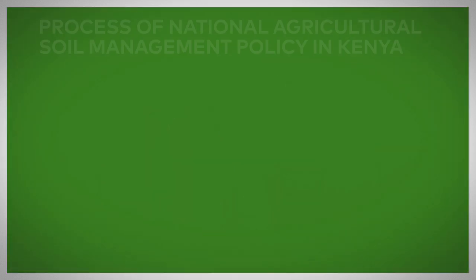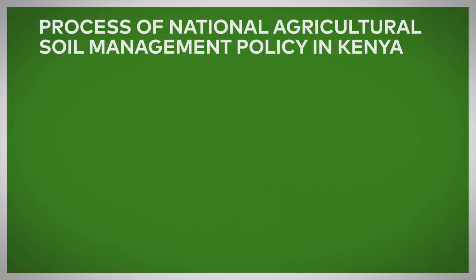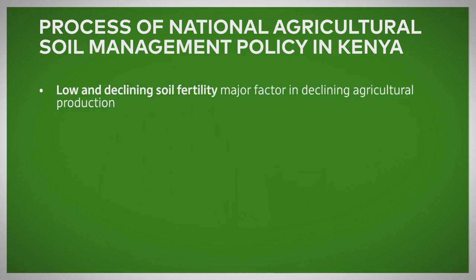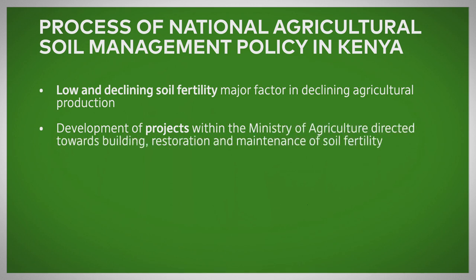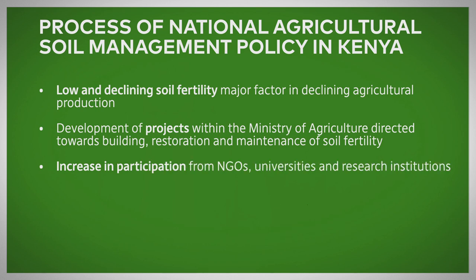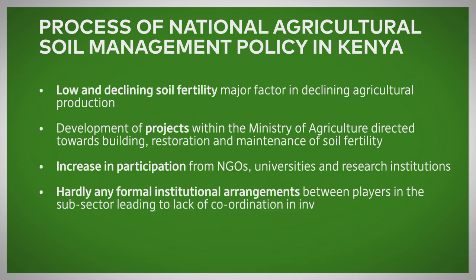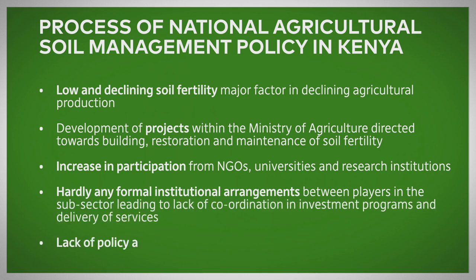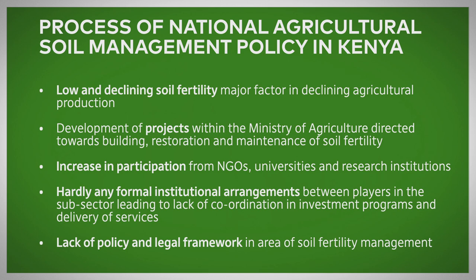Le processus de développement de la politique nationale de gestion des sols agricoles au Kenya a été déclenché par plusieurs facteurs. En premier lieu, des rapports du ministère de l'Agriculture et d'autres parties prenantes ont indiqué qu'il y avait un déclin continu de la productivité des sols et que les rendements des exploitants baissaient en continu. Par ailleurs, les parties prenantes ont fait part de leur inquiétude quant à l'absence de coordination, et il y avait des problèmes de cadre politique et juridique manquant à travers lesquels les problèmes liés au sol pouvaient être résolus.